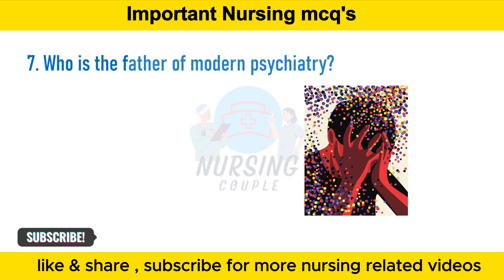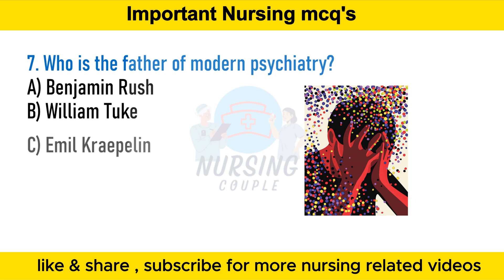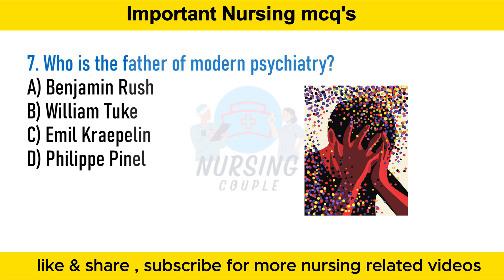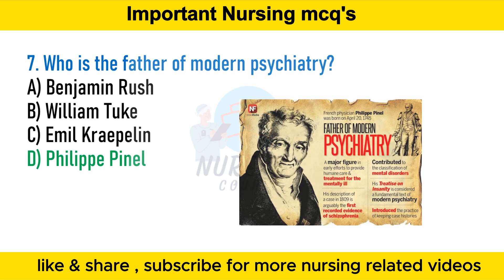Who is the father of modern psychiatry? Option A Benjamin Rush, option B William Tuke, option C Emil Kraepelin, option D Philippe Pinel. The answer is option D Philippe Pinel.